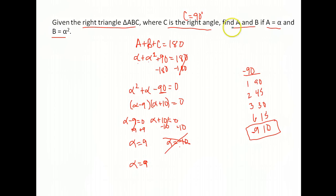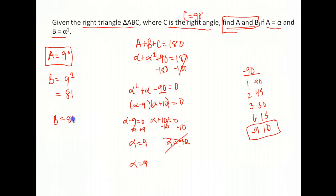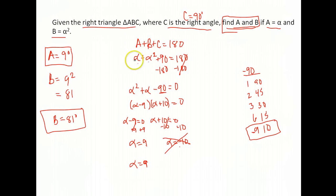We're not done yet — we have to find A and B, which is what they actually asked for. A equals alpha, and alpha is 9, so A is 9 degrees. B is alpha squared, so B is 9 squared — 9 times 9 is 81 — so B is 81 degrees. We started with the same method, but depending on what you get, you may need different strategies to solve.